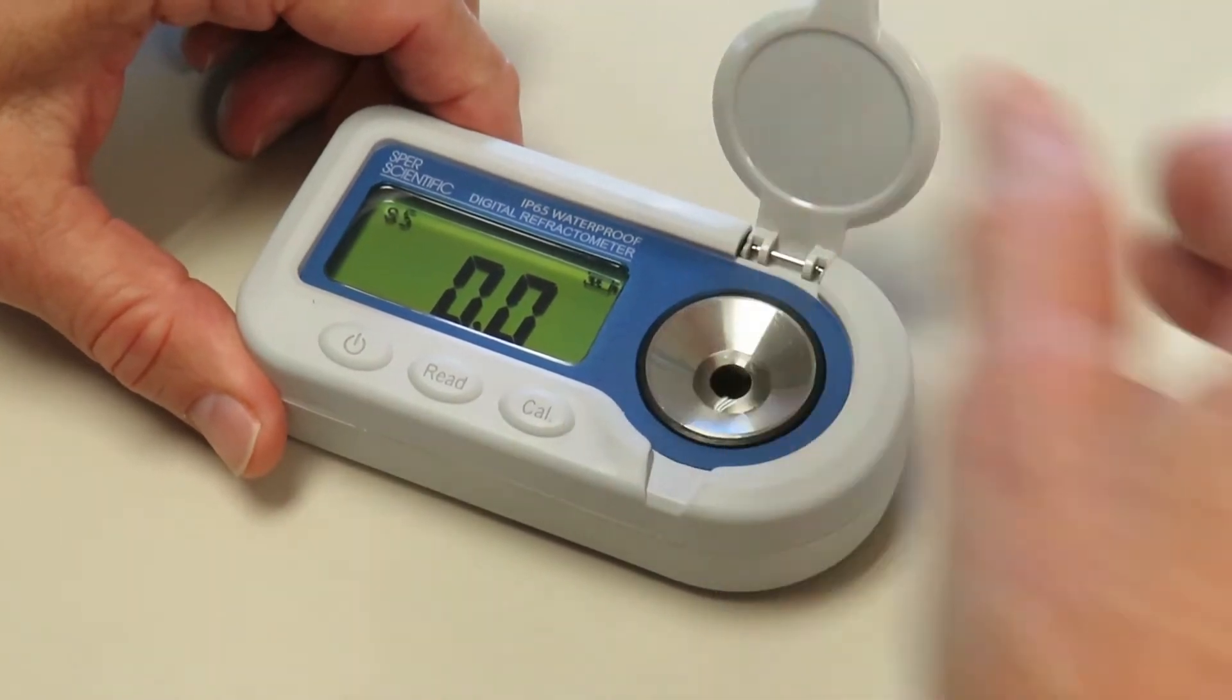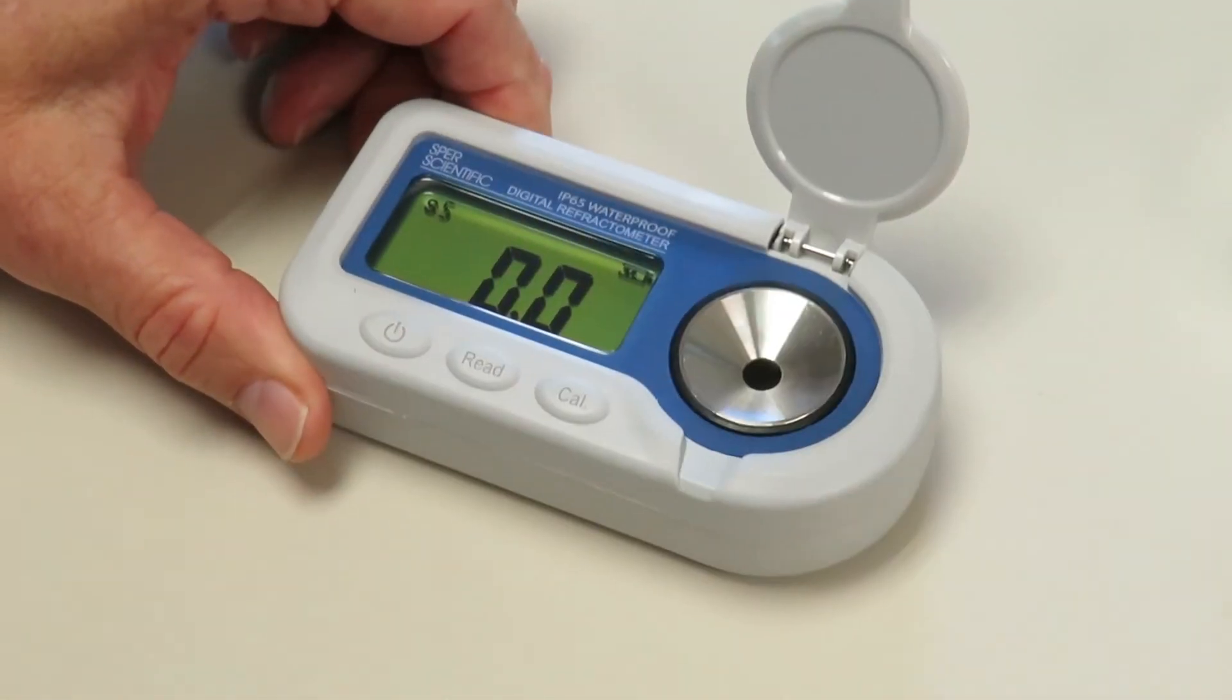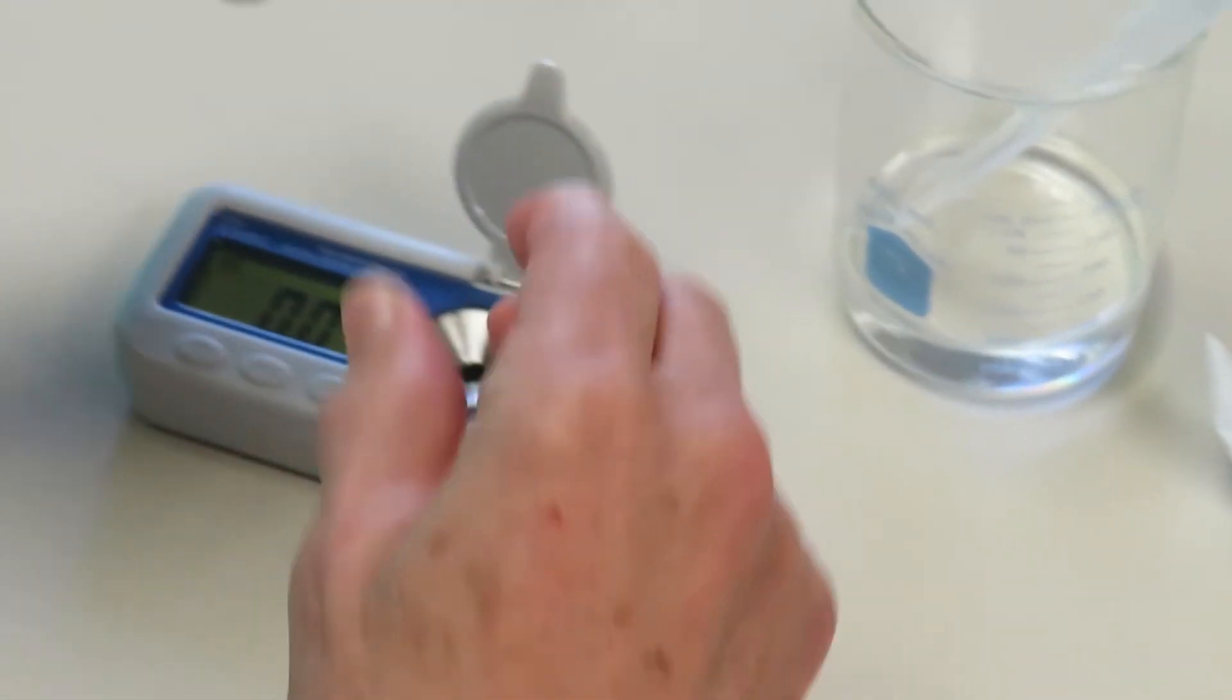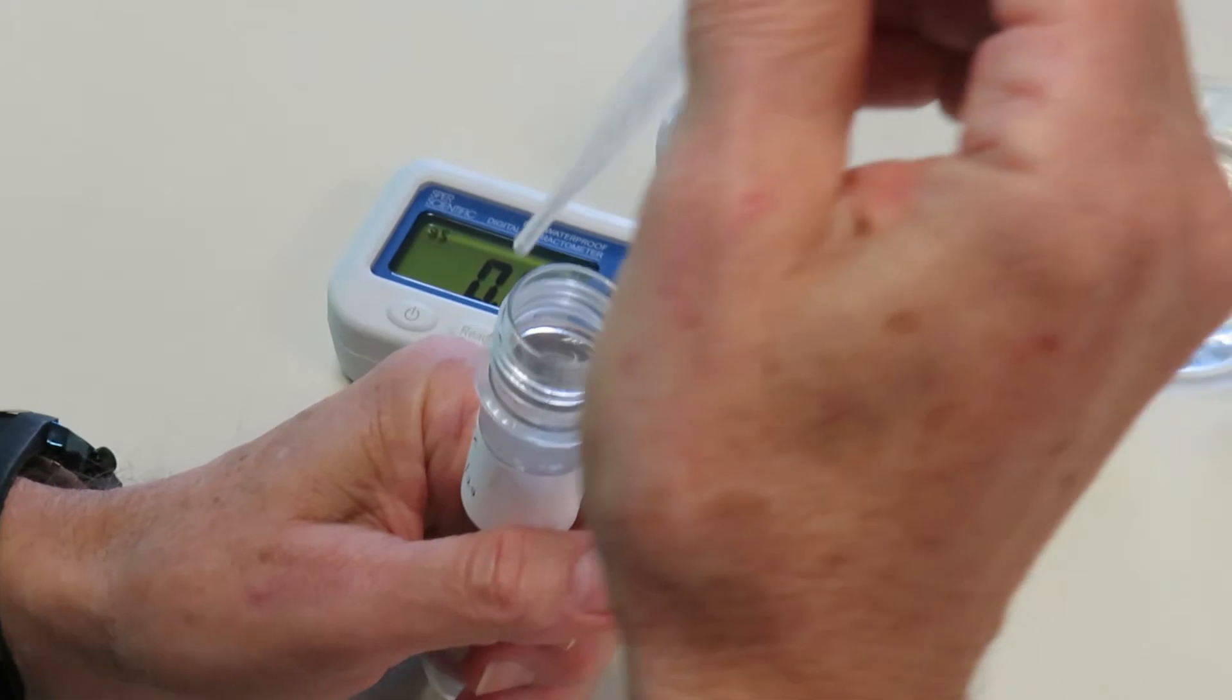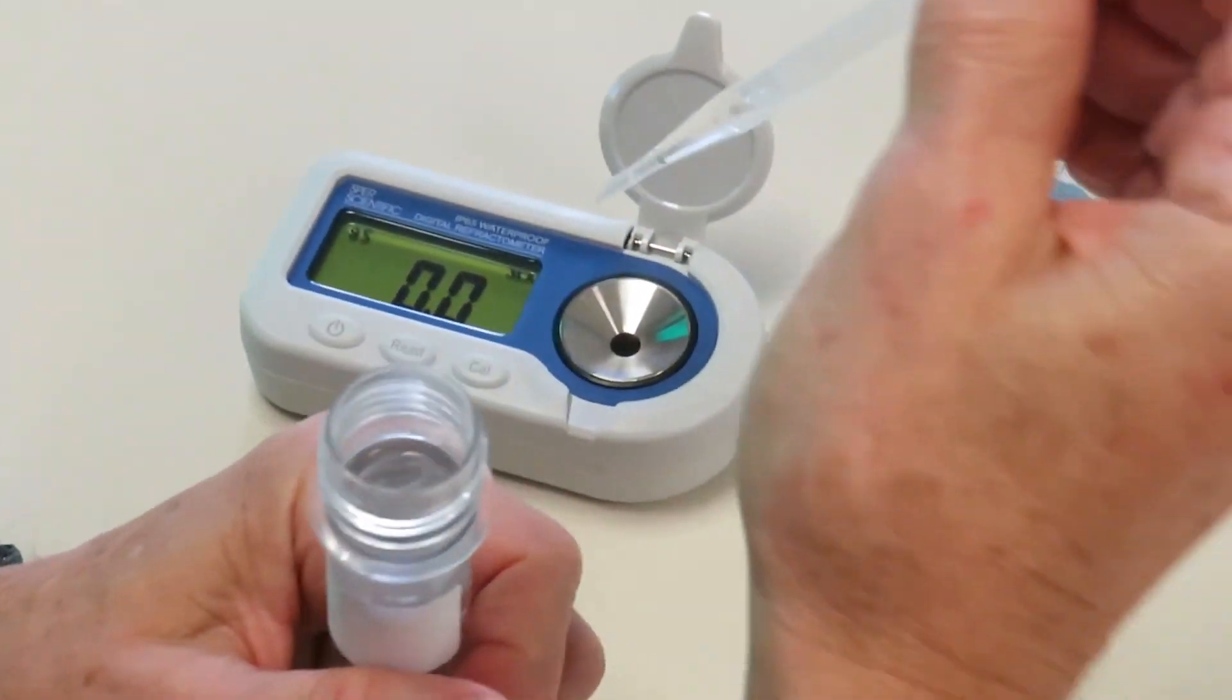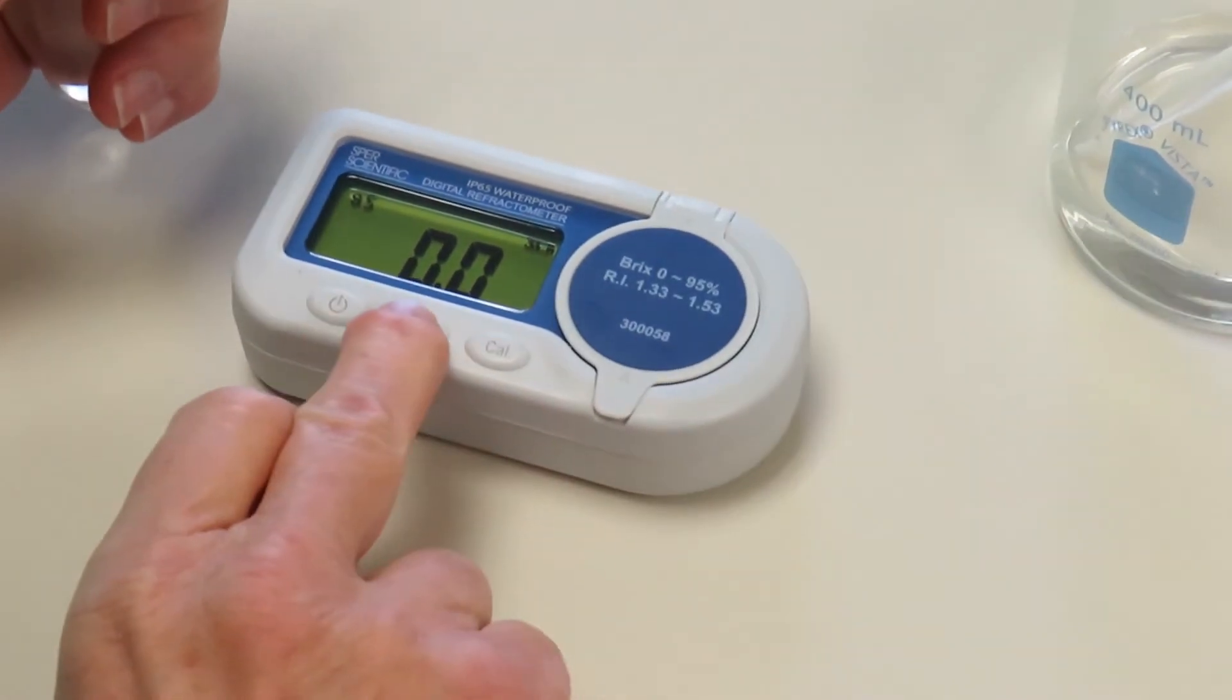Next, we'll show you how to read, so that's how you would calibrate it. And now I have here a sugar solution, and all we need to do to read it is put a few drops again, enough to cover that lens, cover it, and hit the Read button.